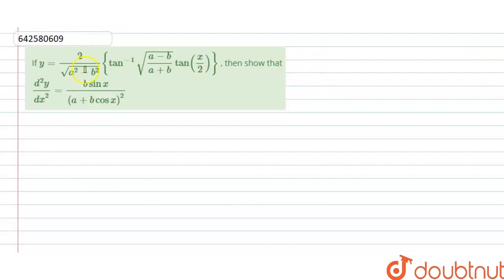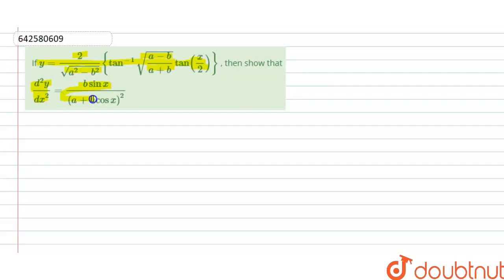Hello everyone, let's start with the question. The question says that if y is equal to 2 upon square root of a square minus b square, into tan inverse of square root of a minus b upon a plus b, into tan of x by 2, then show that d²y/dx² is equal to b sin x upon (a plus b cos x) whole square.